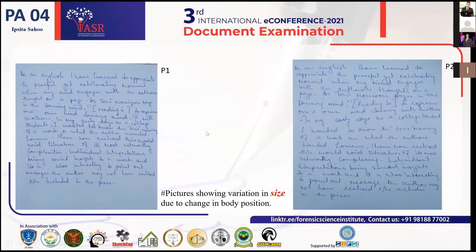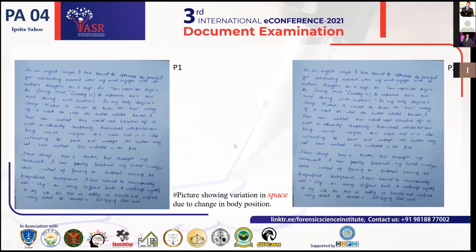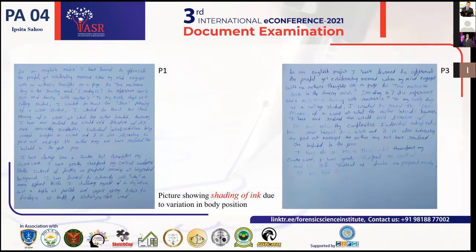These are the differences observed when someone changes their position from the standard position to a different position. This picture shows variation in alignment in position one while sitting at the desk versus leaning at the desk. The next slide shows variation in space due to change in body position, where P1 is the standard and P2 is the second position.